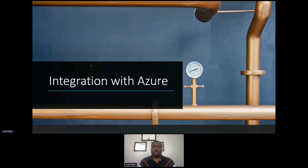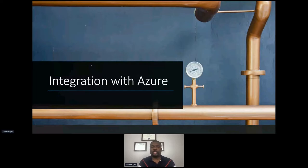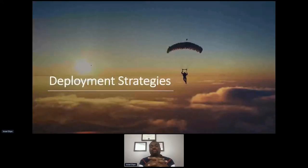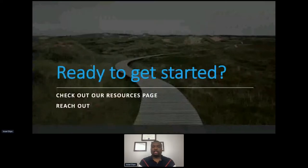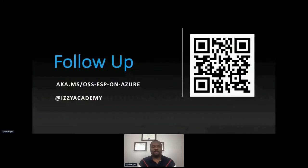To summarize what we've covered: how to integrate Apache Flink with Azure, including the endpoints and products available — Blob Storage, Cosmos DB, JDBC endpoints, and Kafka. We also covered four deployment options: Azure Virtual Machine Scale Sets, Azure Kubernetes Service, the Ververica platform, and the Cloudera Data Platform. I have a link where you can find these resources, and I'll be updating that page with additional materials from today's session.